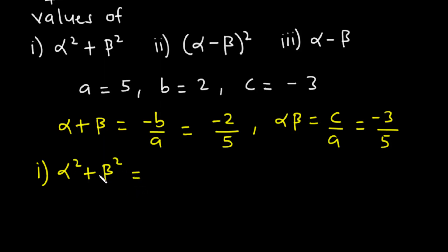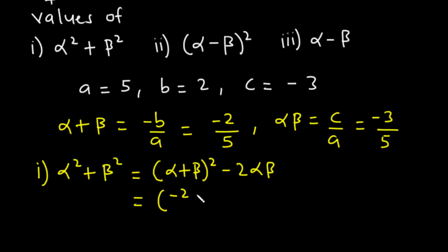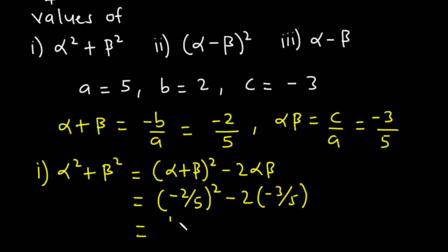We know that alpha squared plus beta squared is equal to alpha plus beta all squared minus 2 alpha beta. Alpha plus beta is negative 2 over 5, so we have negative 2 over 5 squared, minus 2 times negative 3 over 5. Negative 2 squared is 4 and 5 squared is 25, so we have 4 over 25. Negative times negative is positive, so plus 6 over 5. Therefore 4 over 25 plus 6 over 5 is equal to 34 over 25.